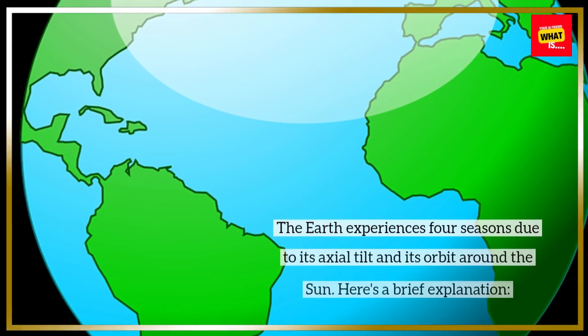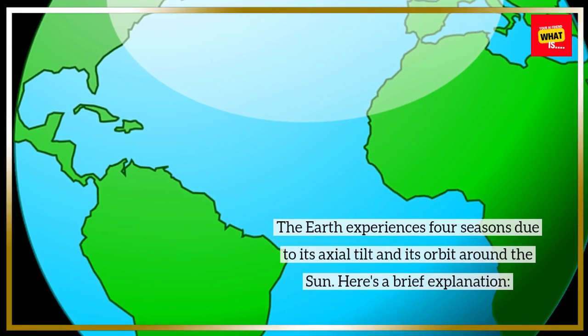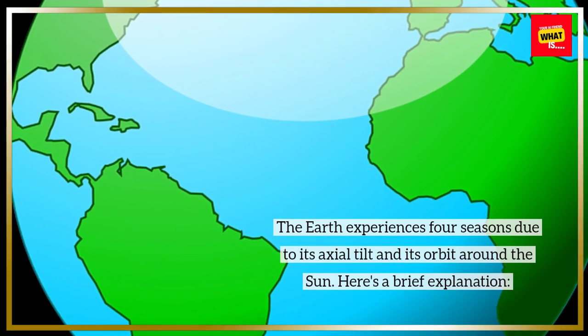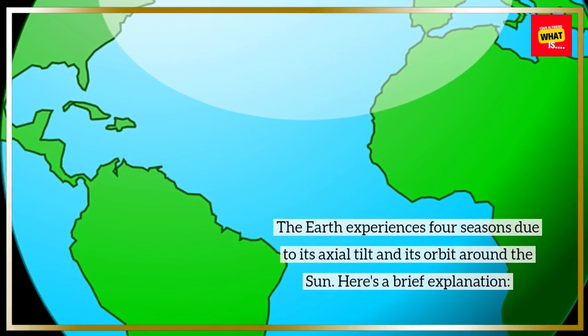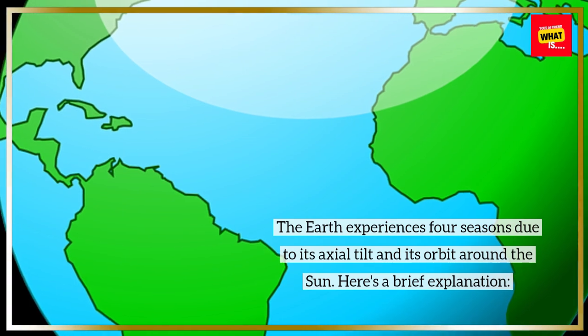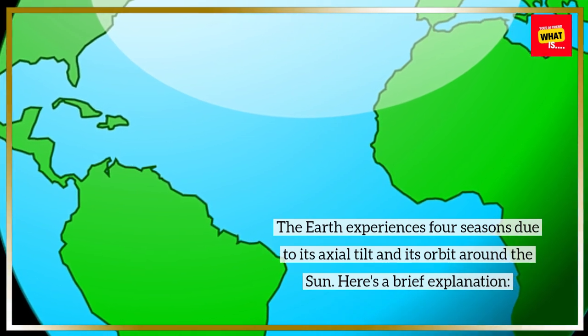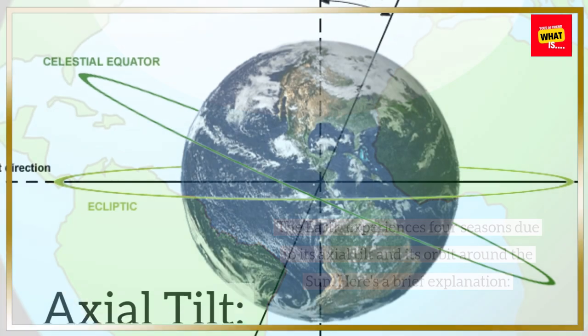The Earth experiences four seasons due to its axial tilt and its orbit around the Sun. Here's a brief explanation.